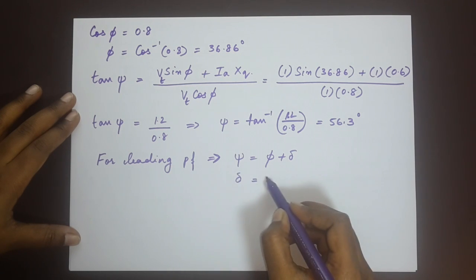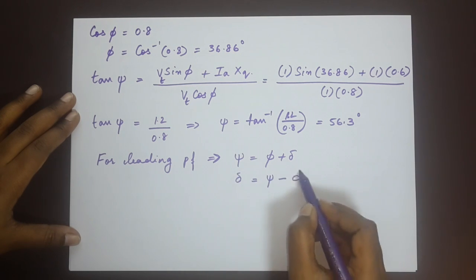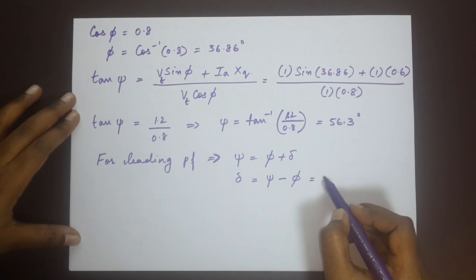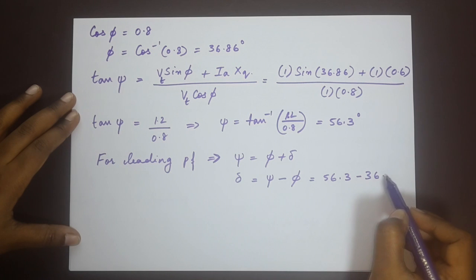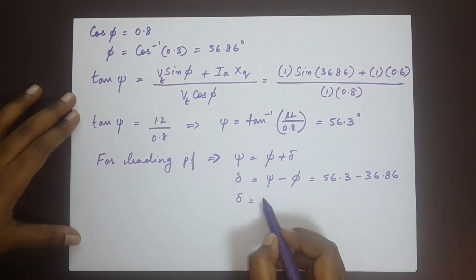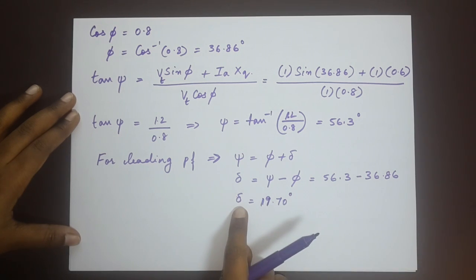So delta would be equal to psi minus phi. That would be 56.3 degrees minus 36.86. So that gives us a delta of 19.7 degrees. So now that we have delta value, we can find out what the induced voltage is.